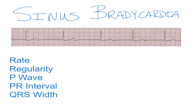Welcome to our sinus bradycardia video. We're going to learn about the differences between sinus bradycardia and normal sinus rhythm. As you'll recall from our other video, a normal sinus rhythm is a rate between 60 and 100 beats per minute, with a P wave, a normal QRS, and the T wave.